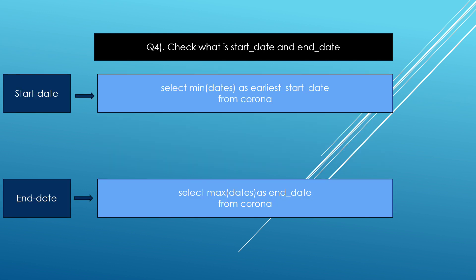The next question is: check the start date and end date. Basically I used two aggregate functions — MIN and MAX. The MIN function returns the minimum value in the database table, and the MAX function returns the maximum value. So I used MIN as the start date and MAX as the end date.